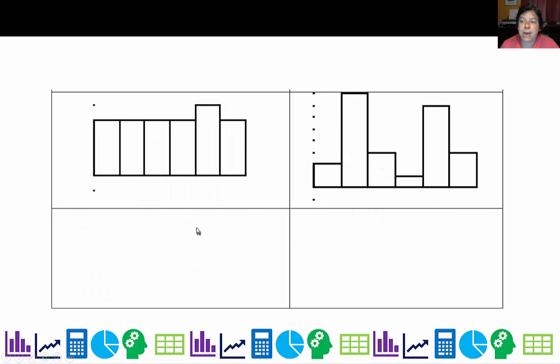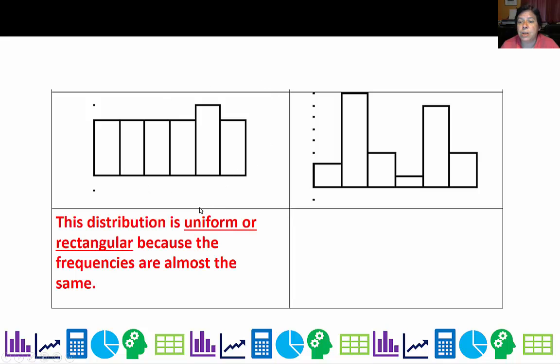Now two other shapes you will encounter in histograms. One is called a uniform or rectangular distribution because the frequencies are almost the same. A great example of this is if I was rolling die, which is more likely, rolling a one or six? Well, hopefully you answered, they're equally likely. So that means that the probabilities for each of the classes should be the same.